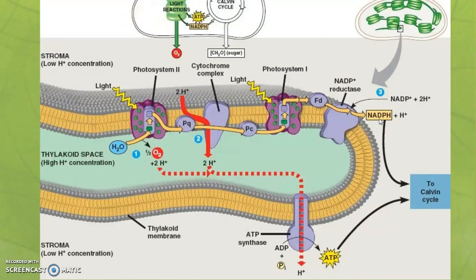So our high-energy molecules NADPH and ATP will go to the Calvin cycle — the light-independent reactions — which happens in the stroma. In my next brief video clip, I'm going to discuss the Z scheme and the Calvin cycle, so we'll wrap it up there. Thank you, I'll see you in the next clip.